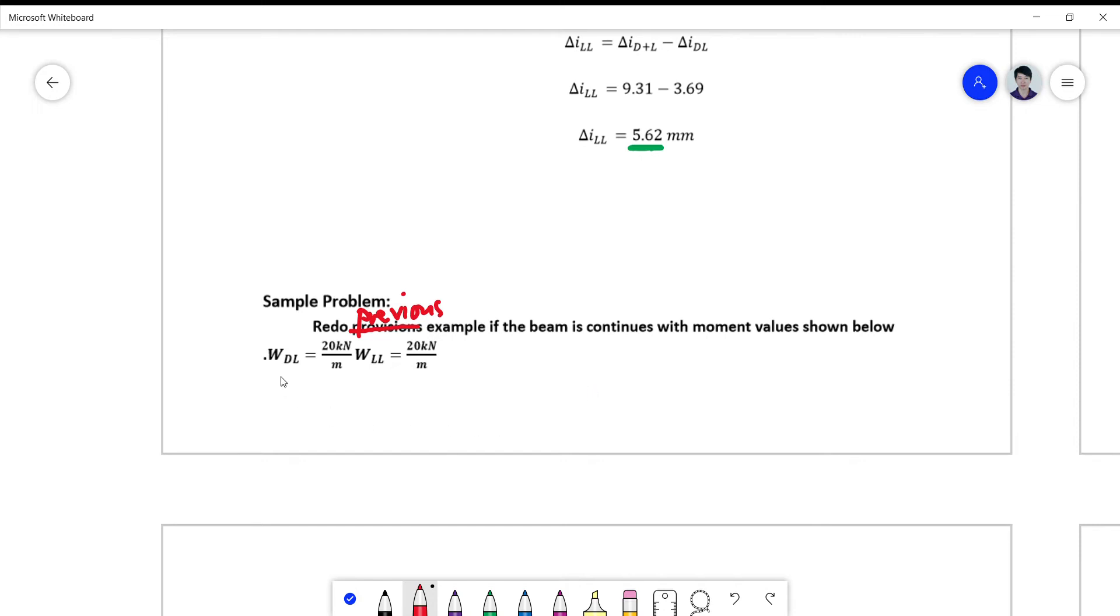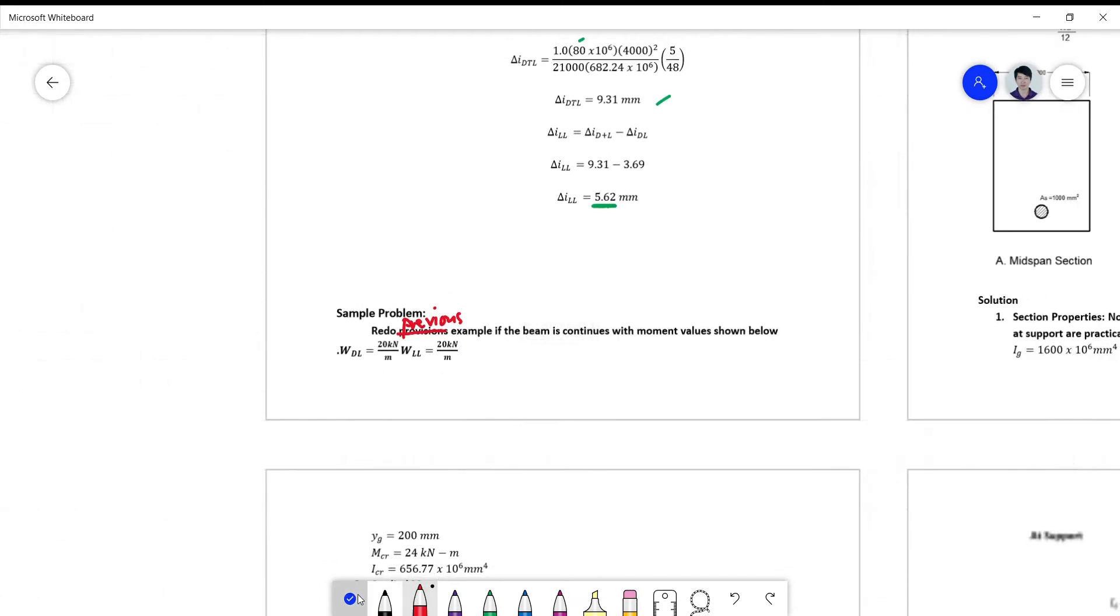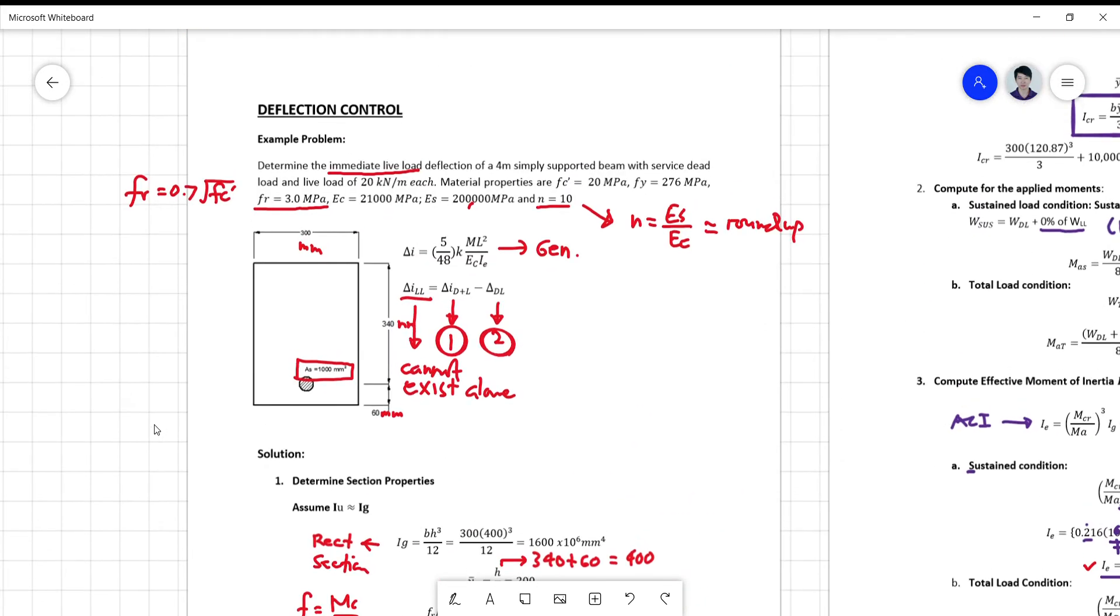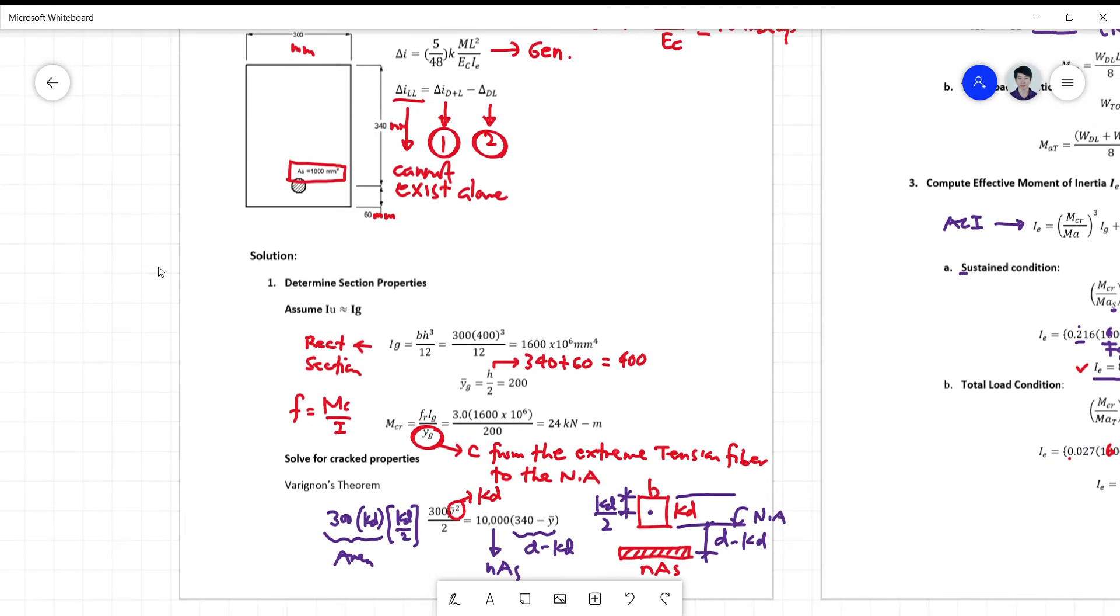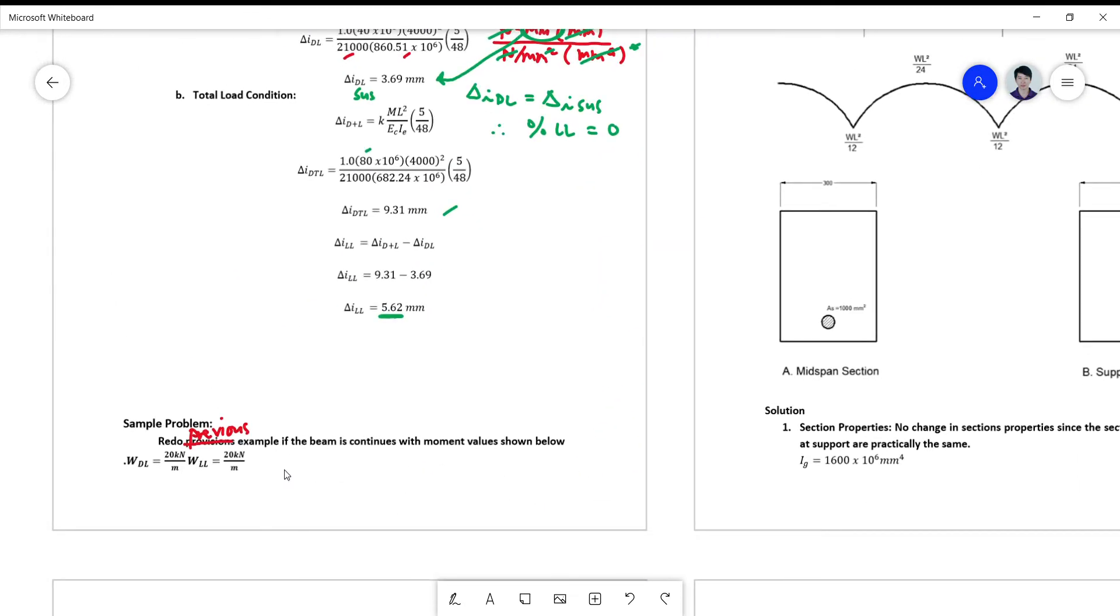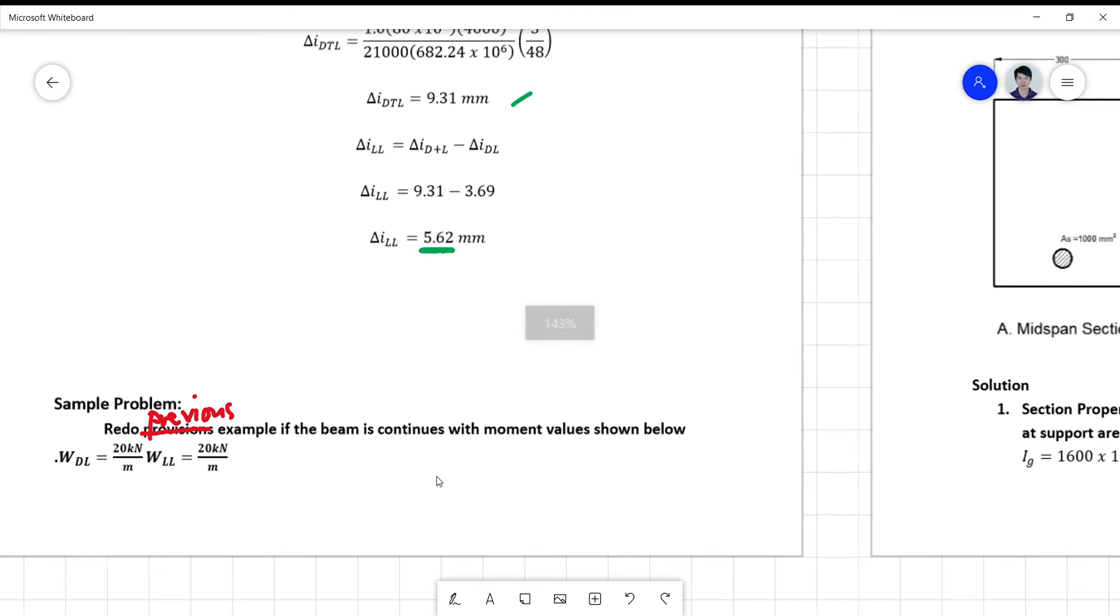We have here the dead load and the live load are 20 kilonewtons per meter both. The first problem, they are also 20 kilonewtons per meter, so basically the change is only from the simple beam.